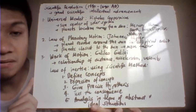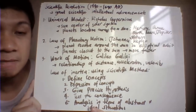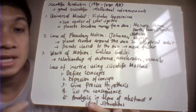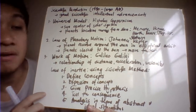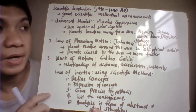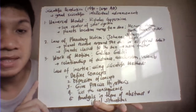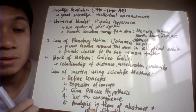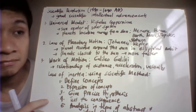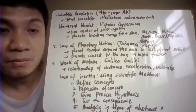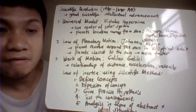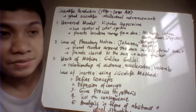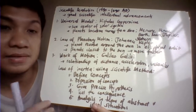The Scientific Revolution was a time period of great scientific achievements in knowledge and methods. The first major contribution is the universal model by Nicolas Copernicus, which stated that the sun is the center of the universe and all planets revolve around it. Based on their distance from the sun, the planets are ordered: Mercury, Venus, Earth, Mars, Jupiter, Saturn, and Pluto as the farthest.